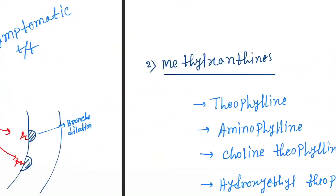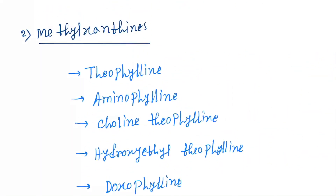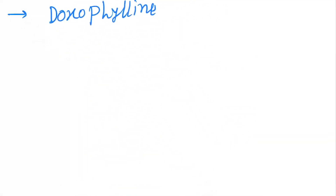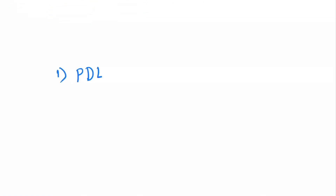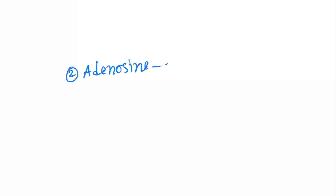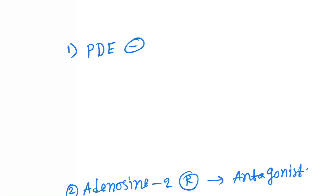Next are the methylxanthines. Methylxanthines act by mainly two mechanisms. The first is PDE inhibition and the second is adenosine-2 receptor antagonism. PDE inhibitors cause a high level of cAMP.